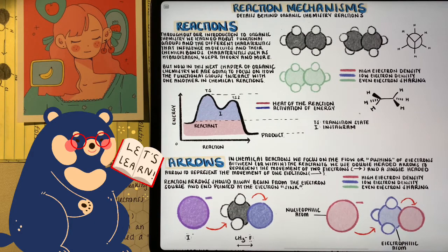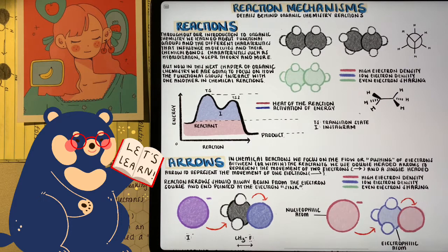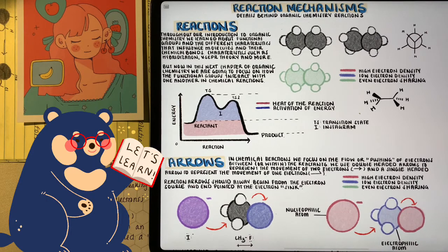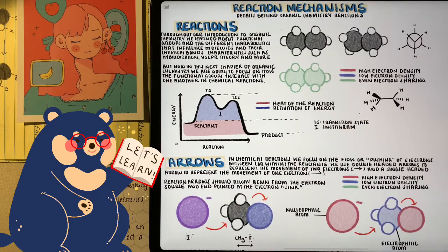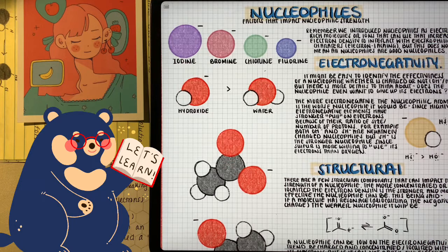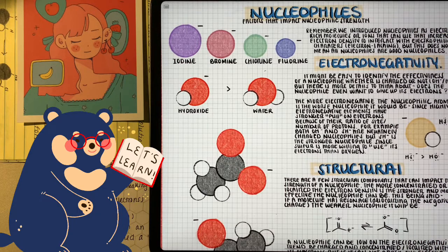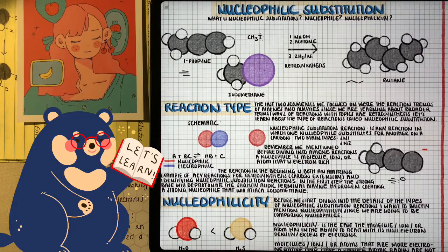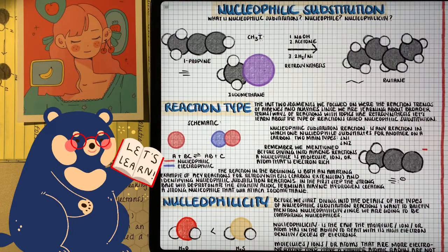Usually because they're connected to a very electronegative element or something that's pulling its electron density off it. Moving forward, we're going to see more and more how these nucleophiles can either be charged or they can be neutral molecules. Since there's such a wide range of different molecules and ions that can act as nucleophiles, we judge them based off their ability to use that excess of electron density to react. We call this their nucleophilicity.